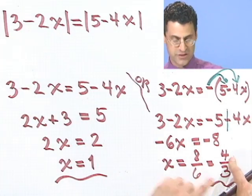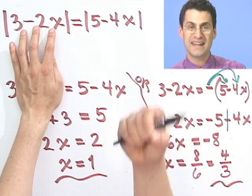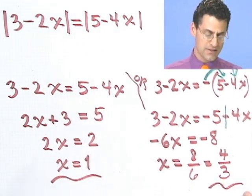If you plug 4 thirds back in here, what you'd see is these two numbers would be equal but off by a negative sign. So when I take absolute values, I'm fine. You can check that if you want. There's a neat example when you have two absolute values.